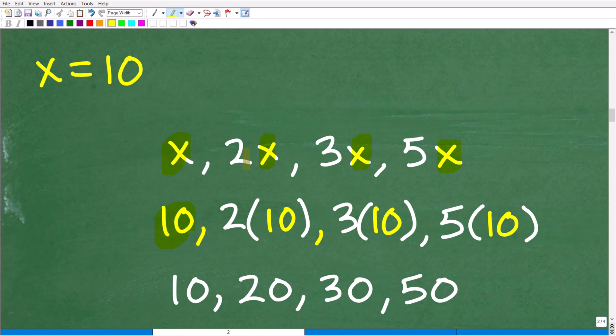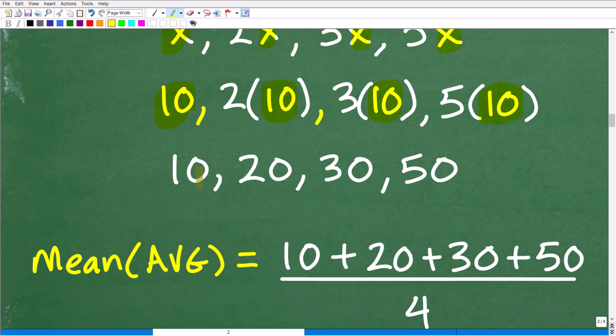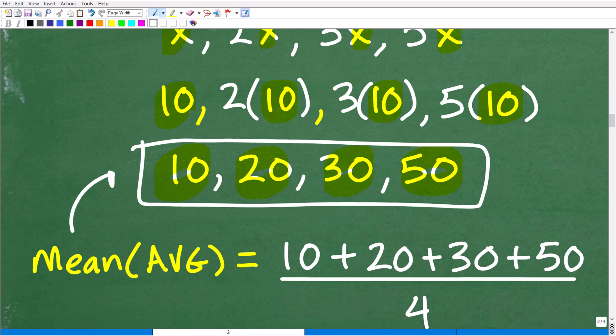So x is 10, 2 times x, or 2 times 10, that's going to be this number, 3 times 10 here, and then 5 times 10 right there. This is going to be super easy. So our values, our actual values is 10. 2 times 10 is 20, 3 times 10 is 30, 5 times 10 is 50. So now we're going to find the mean or the average of our data set, 10, 20, 30, and 50.